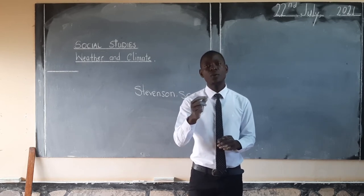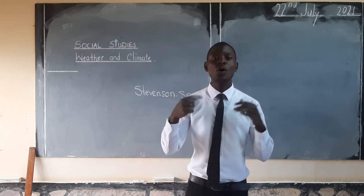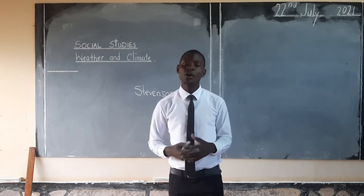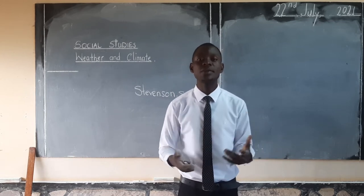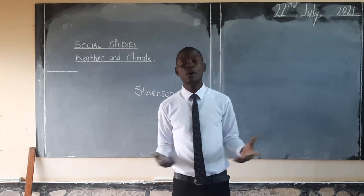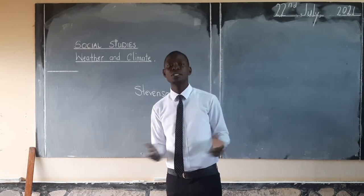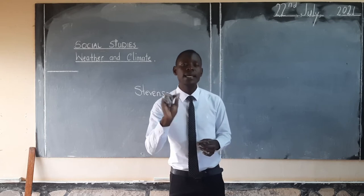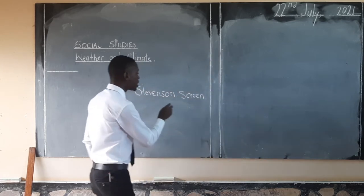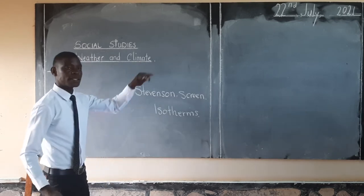One last thing — we also looked at temperature, where we defined what temperature is. We said temperature is how cold or hot the air is, or temperature is the hotness or coldness of air or the body. The units for temperature are in degrees Celsius. The instrument used to measure temperature is the thermometer, and these come in two types: maximum and minimum thermometer. There are also lines drawn on the map joining places of the same temperature — those lines are called isotherms.